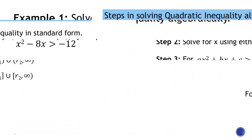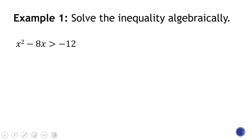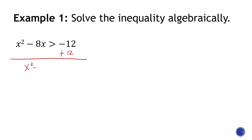Let's go straight to the first example. This inequality is not in standard form, so I'm going to add 12 on both sides. That gives me x squared minus 8x plus 12 is greater than 0. That's step number one.